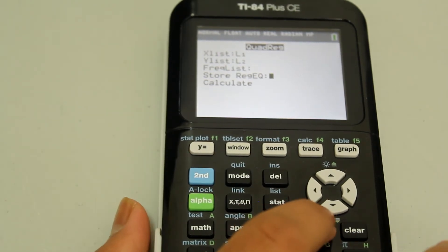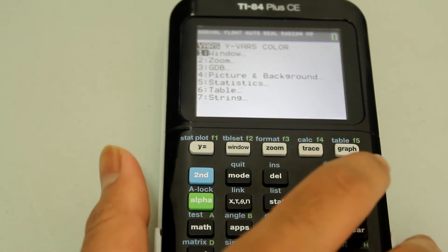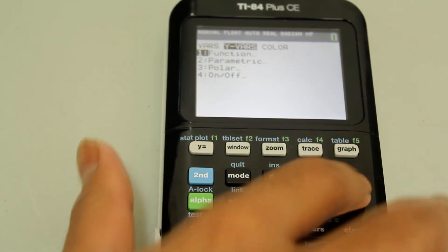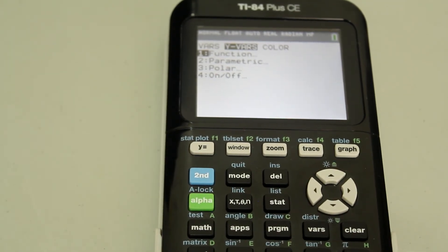we're going to hit vars. And afterwards, we're going to go to Y vars using the right arrow, and then select the first one function either using the number one or enter.